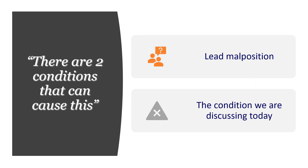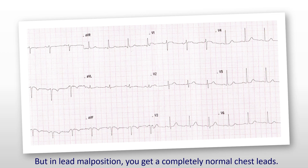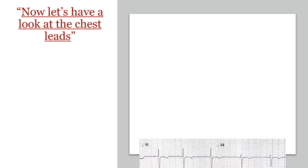When you see these changes, there are two conditions that can cause this: lead malposition or the condition we're talking about today. Here is an example of a lead malposition ECG — negative P waves in II, III, AVF, negative complexes, negative T waves, and positive everything in AVR. However, with lead malposition, the chest leads are completely normal, because limb lead malposition only affects the limb leads. So with lead malposition, I would expect the chest leads to look completely normal.